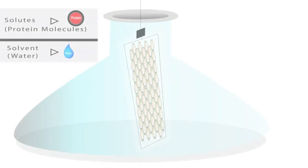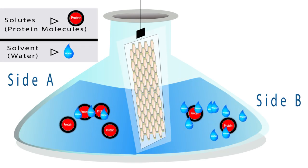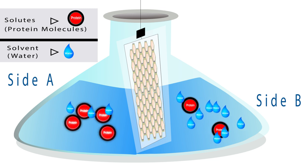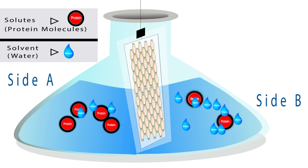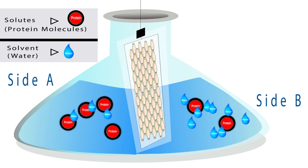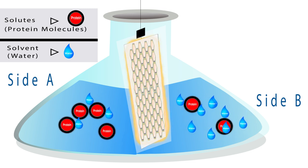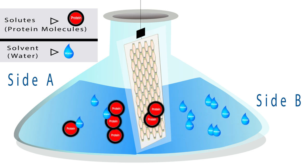Let's examine what this looks like in a lab setup using sides A and B in this beaker. Side A has a lot of large protein molecules and a few water molecules. Side B has fewer protein molecules and more water molecules. The semi-permeable membrane that separates the two sides has small openings that prevent the protein molecules from passing through.